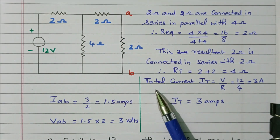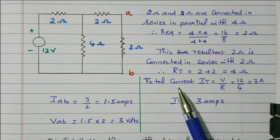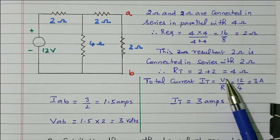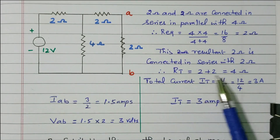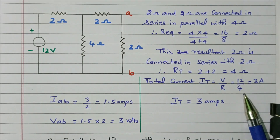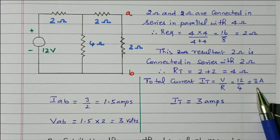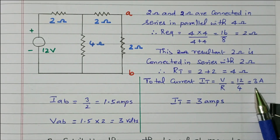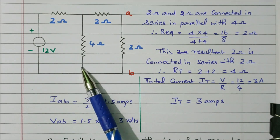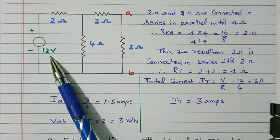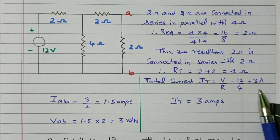The total resistance of this network is 4 ohm. From that we can find the total current. Total current IT equals V divided by R. V is 12 volts, R is 4 ohm. So 12 divided by 4 is 3 ampere. The total current available in the entire network is 3 ampere, so IT equals 3 ampere.